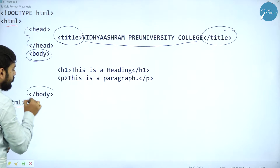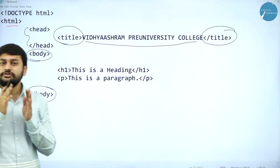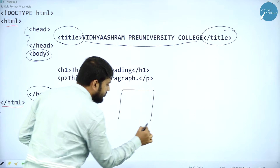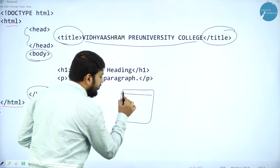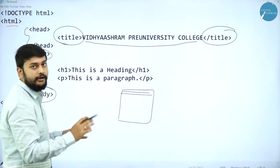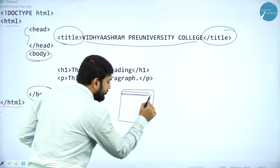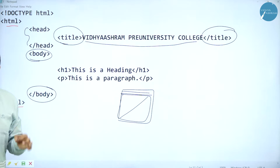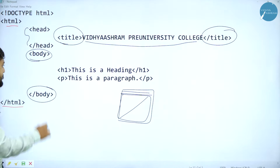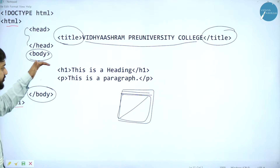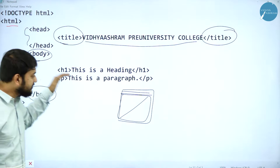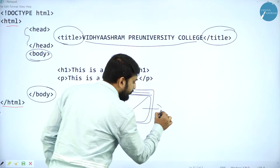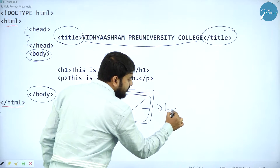What is the use of this body tag? Imagine I have a browser — this is my browser. Here I have my URL and all those things. Whatever content that I have in the main content area of the browser, I will be specifying inside the body tag. Whatever I specify within the body tag, this content will be displayed inside the body area of the browser.